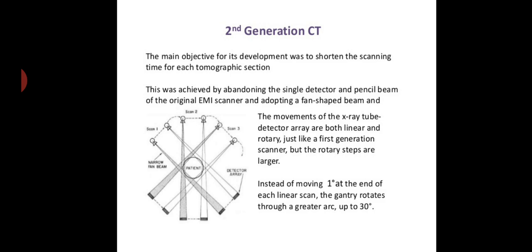Let us talk about the second generation CT. The main objective for its development was to shorten the scanning time for each tomographic section. This was achieved by abandoning the single detector and pencil beam of the original EMI scanner and adopting a fan-shaped beam. There are some similarities and differences between the second generation and the first generation CT.